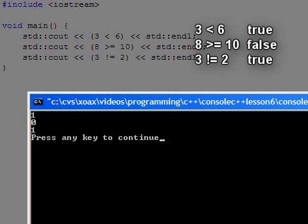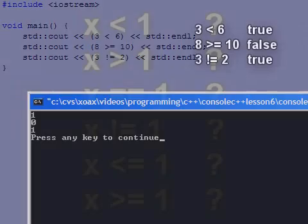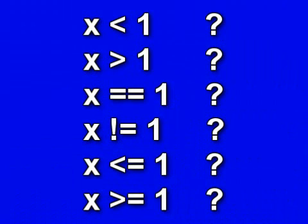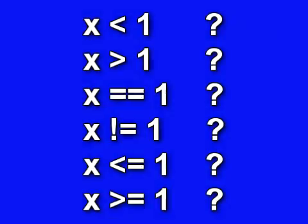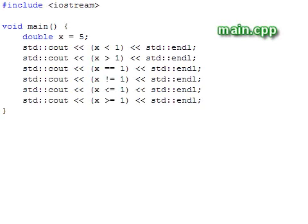Constants are easy to work with, but we will typically want to evaluate operators on variable arguments. In such cases, the truth of the statement will depend on the value of the variable at the time the operator is evaluated. In this program, we evaluate the operators with x set equal to 5.